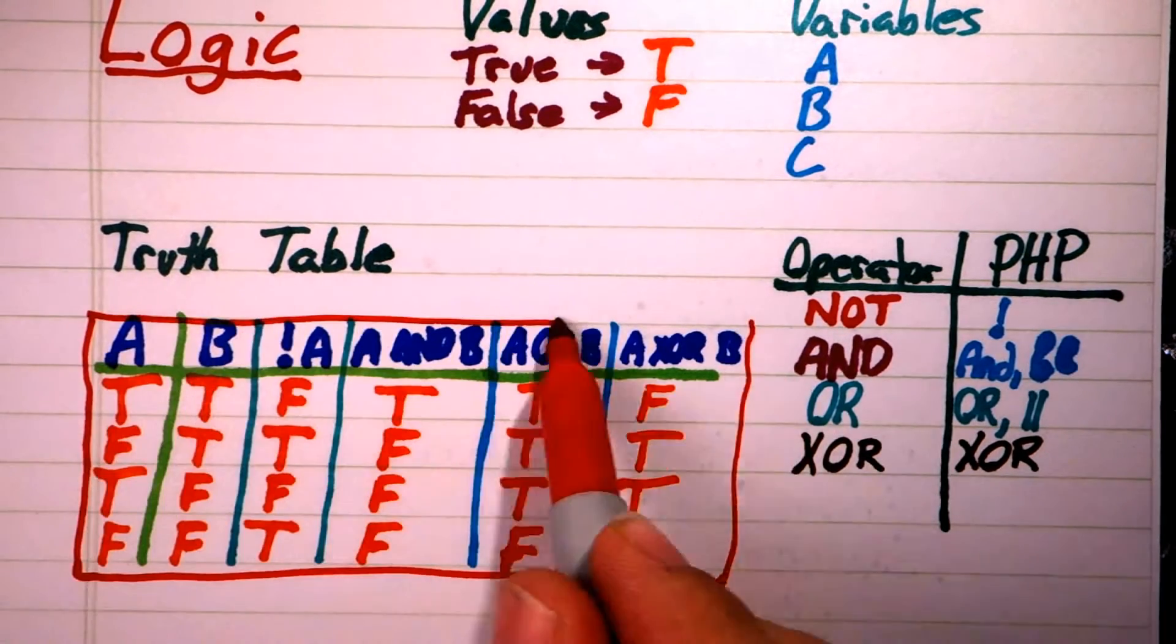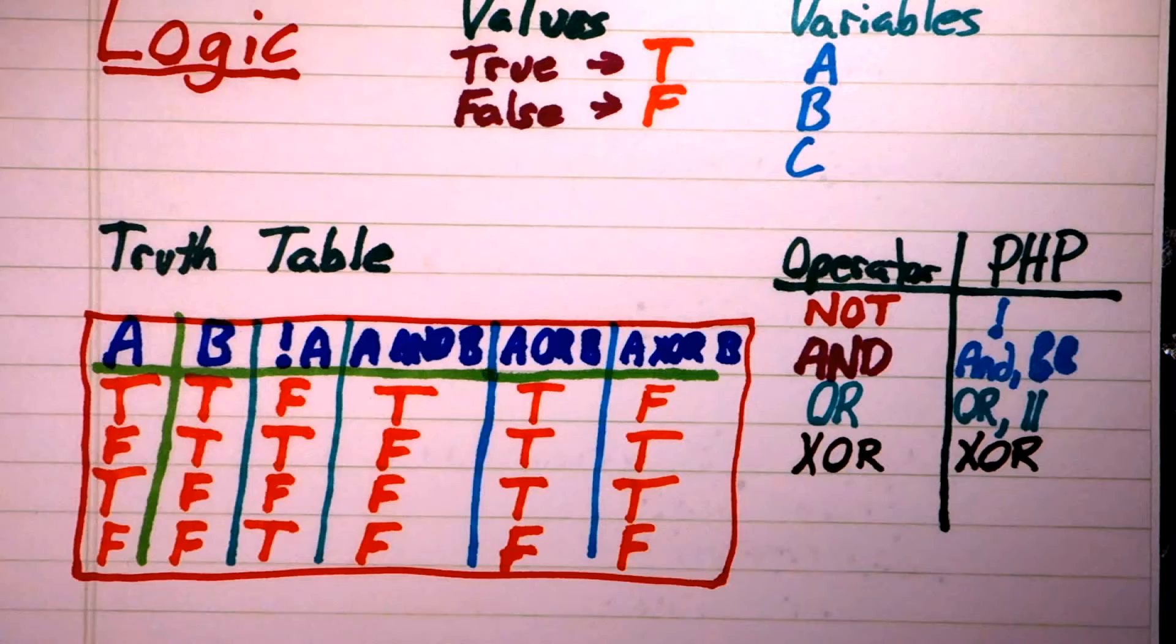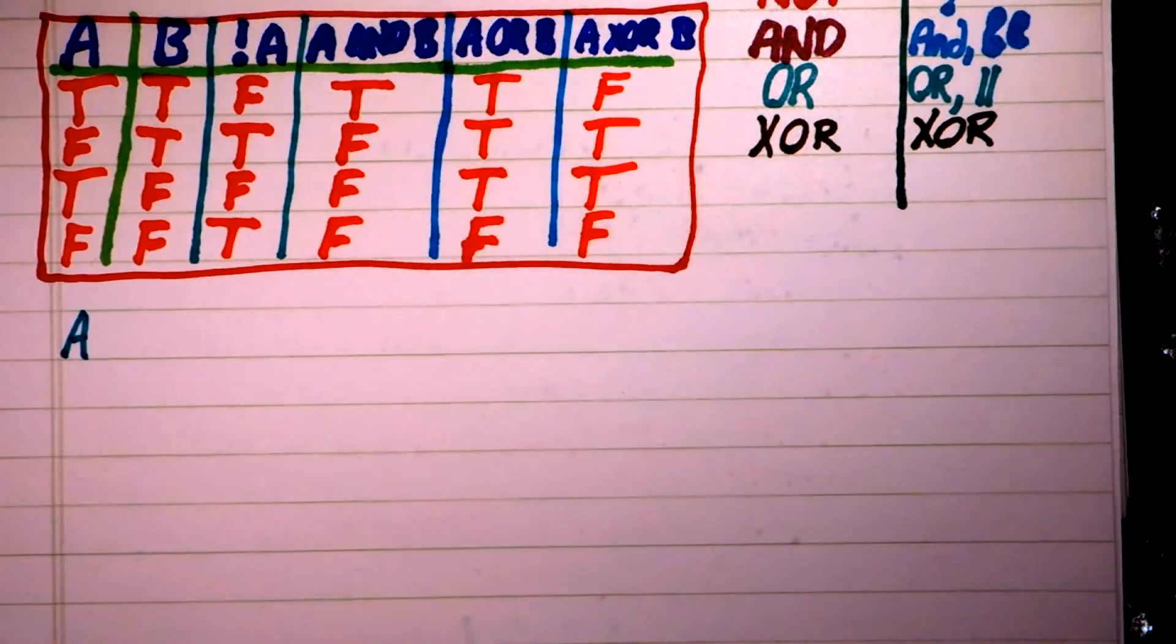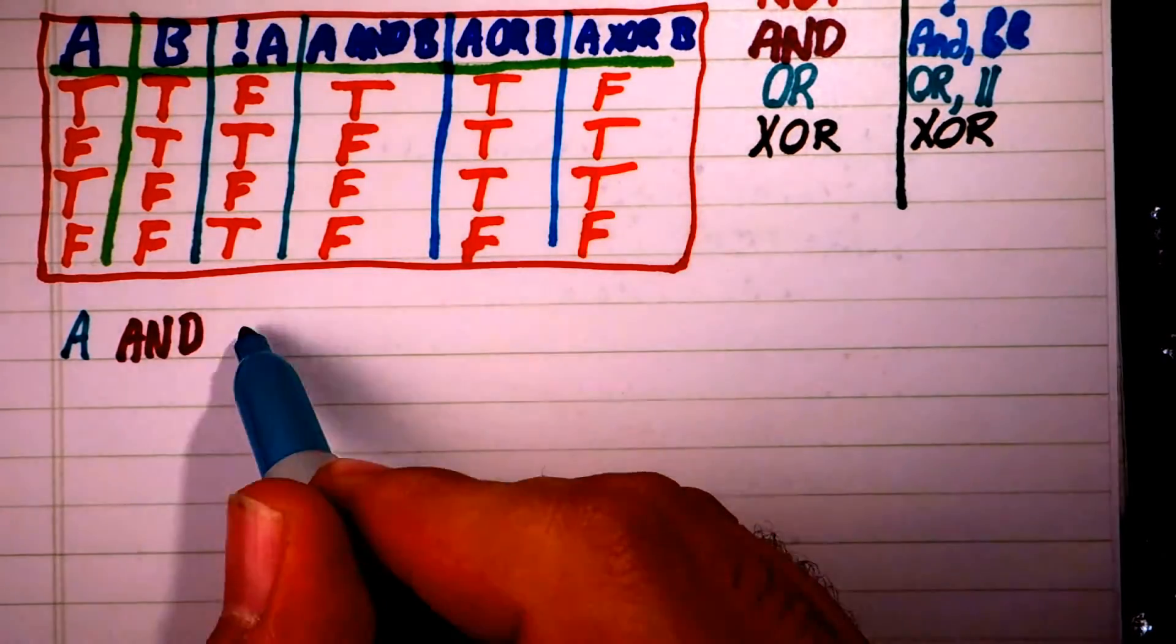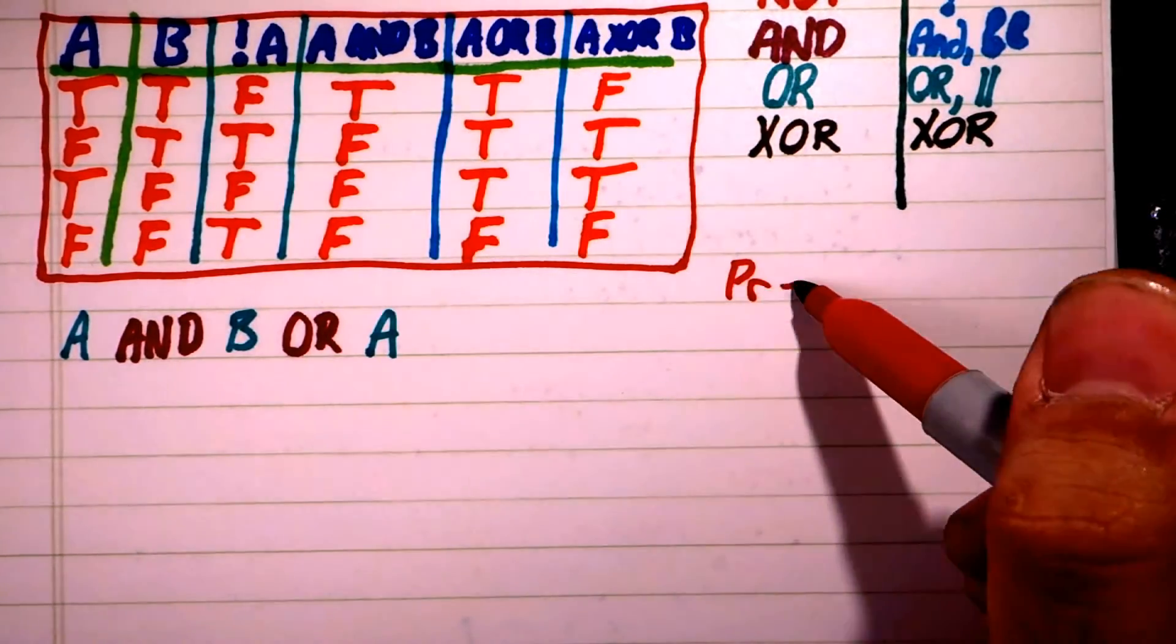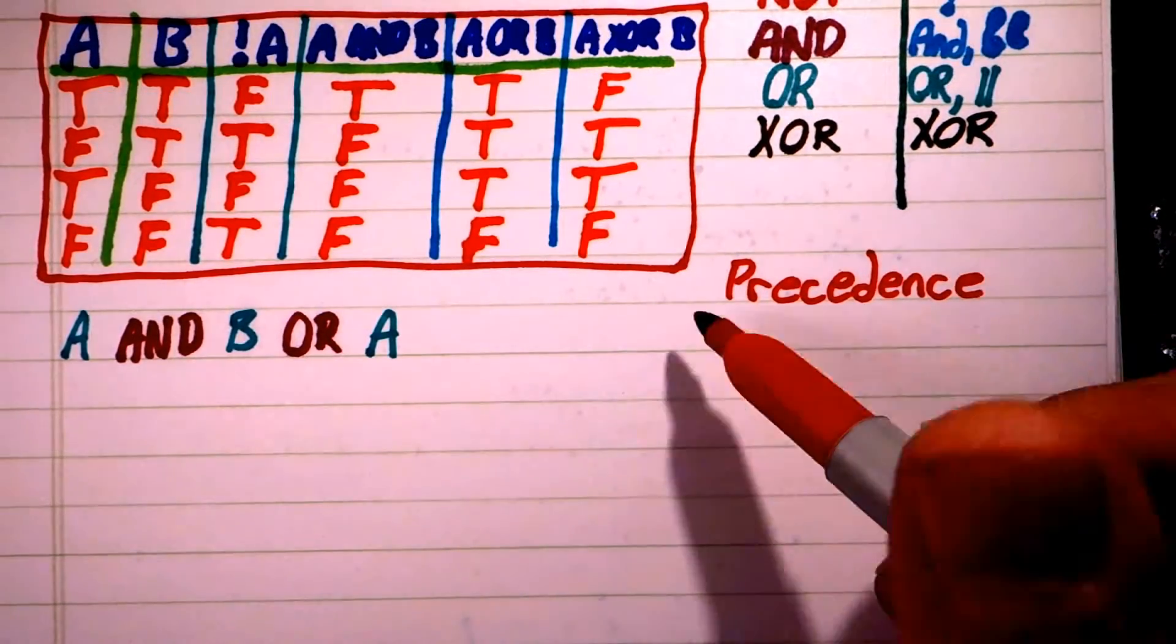Now that we have our basic operators, we can start doing some really interesting things. Let's try combining two operators to create a composite. To understand what this means, we need to look at how PHP will group those operators.